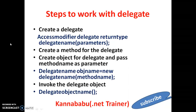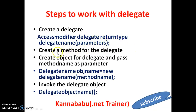What are the steps to work with the delegate? First, we need to create a delegate. Syntax: access modifier, delegate, return type, delegate name, parameters. Then we need to create a method for the delegate, where both the parameters and return type must match. Then create an object for the delegate and pass the method name as parameter: delegate_name object_name = new delegate_name(method_name). Finally, invoke the delegate object using the delegate object name.